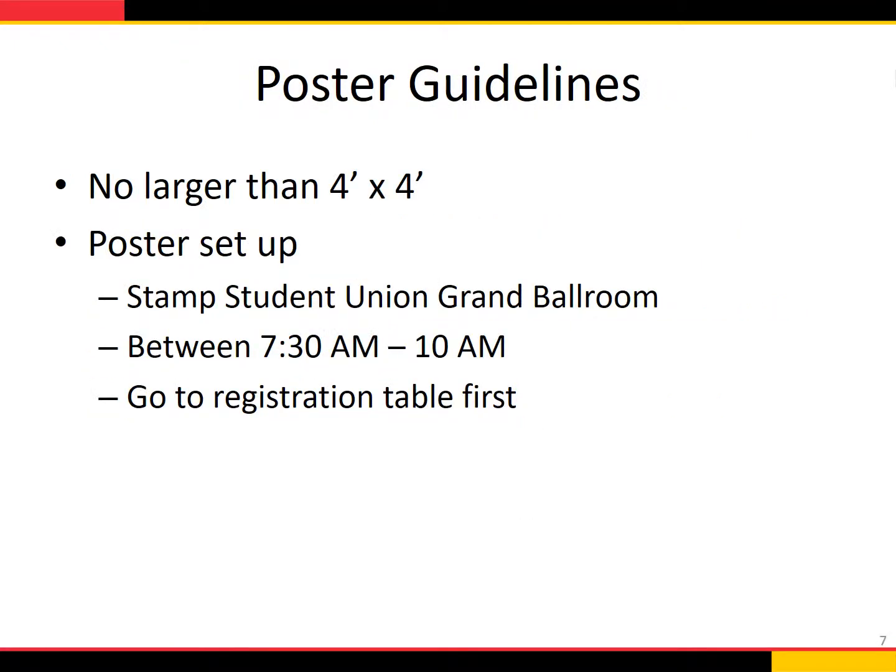Here are some additional poster guidelines and information. A regular poster size is usually three feet by four feet. The assigned space for your poster is four feet by four feet. The poster guidelines section of the webpage under the heading 'Program' provides links to templates that can be used. Specific links exist for the UMB School of Medicine and for the UMD School of Public Health. Check with your school on where you can print your poster and whether your department or school will help with it. The poster session will take place in the Stamp Student Union in the Grand Ballroom at the University of Maryland College Park.